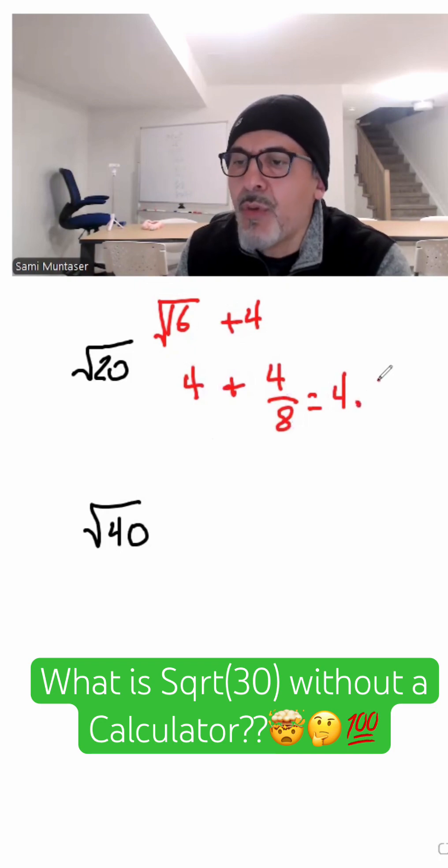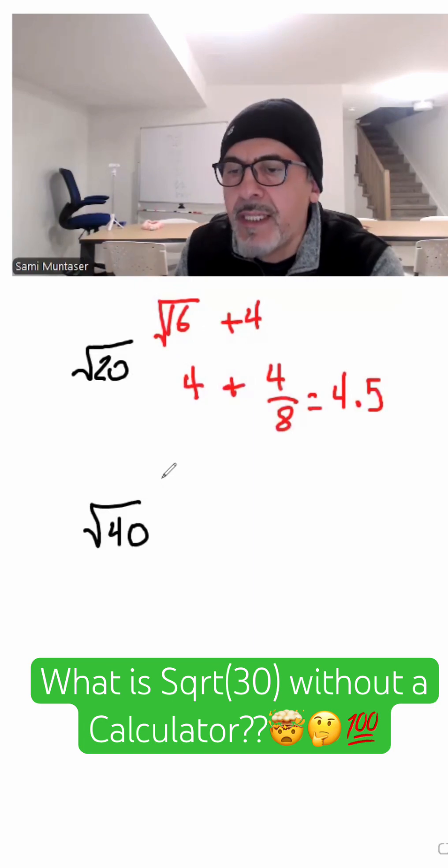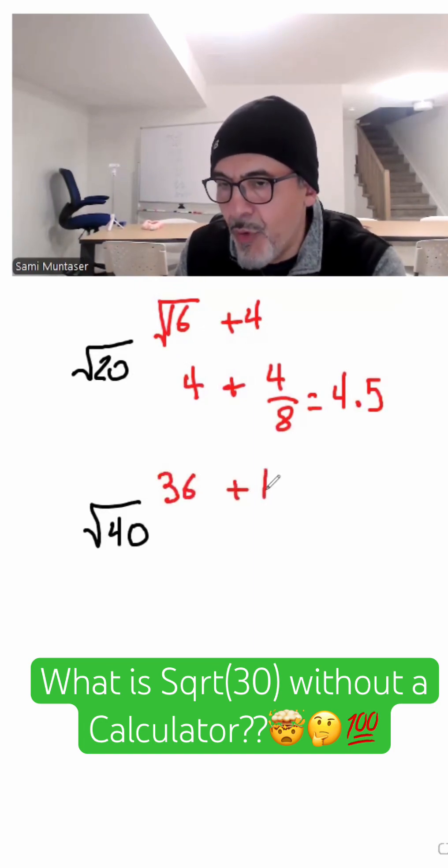So now how about square root of 40? The closest perfect square to 40 is 36, plus a remainder again of 4 to get to 40.